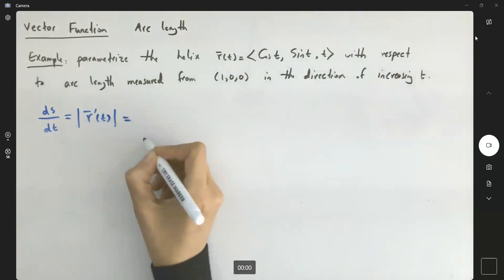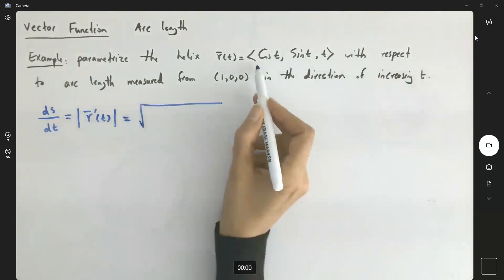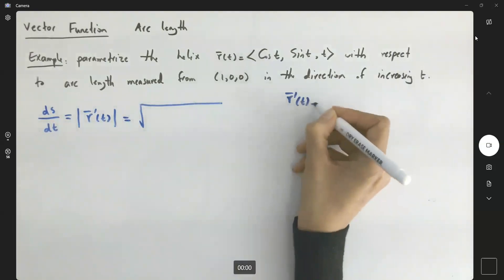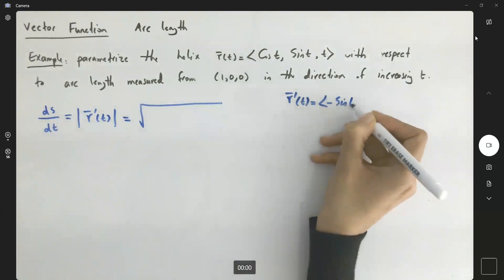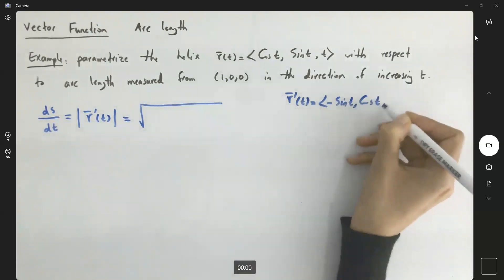So let us compute this. We have the square root of, taking the derivative of r, r prime. Let's quickly write this down: negative sine t, cosine t, and 1.